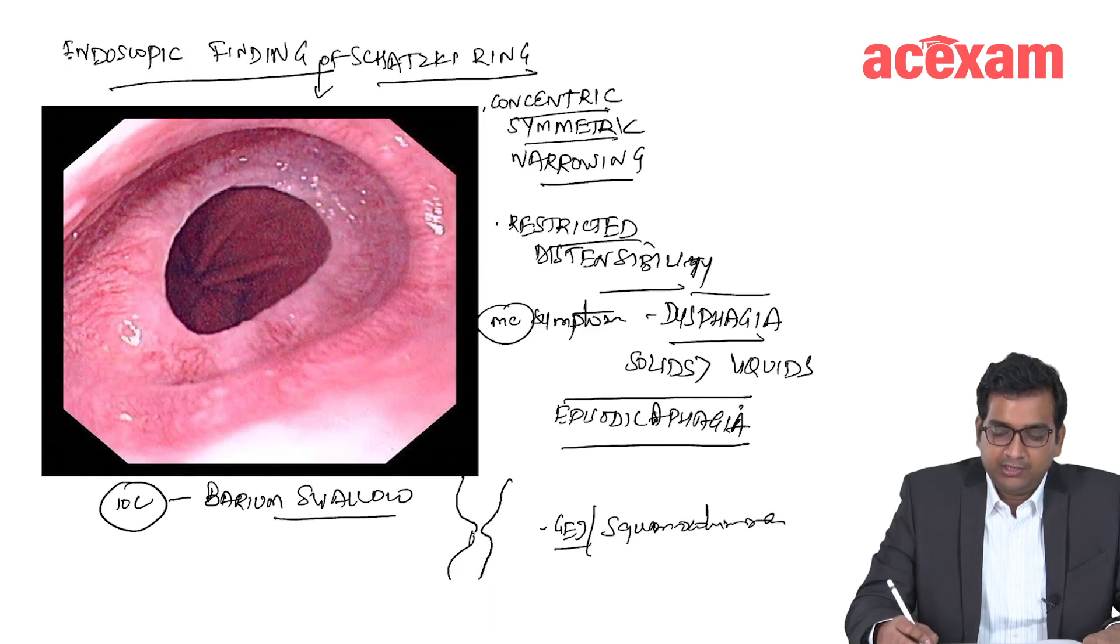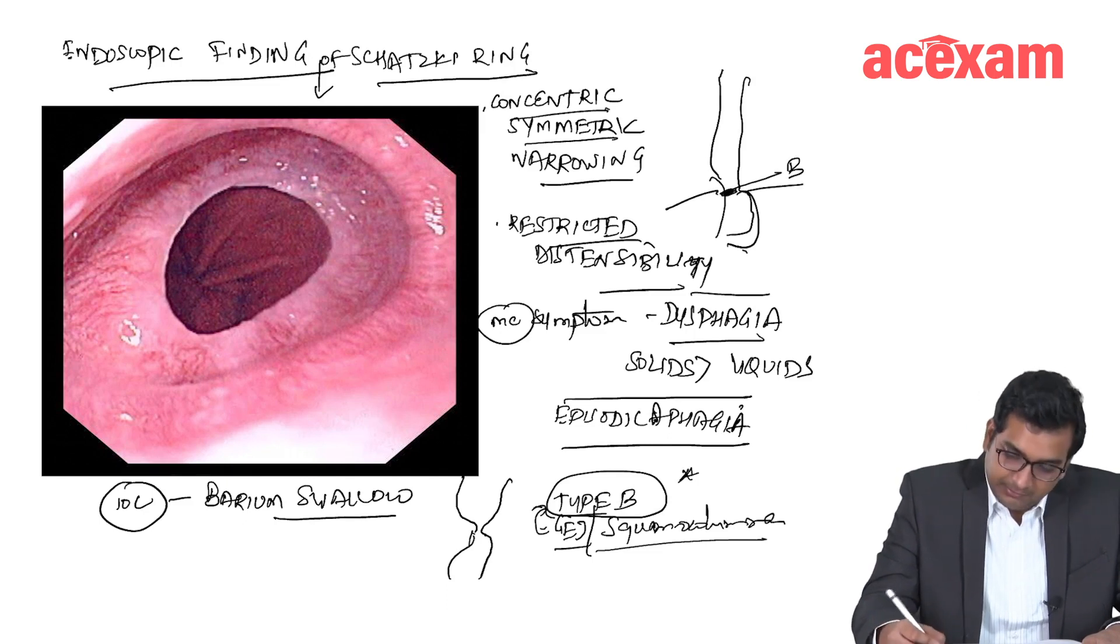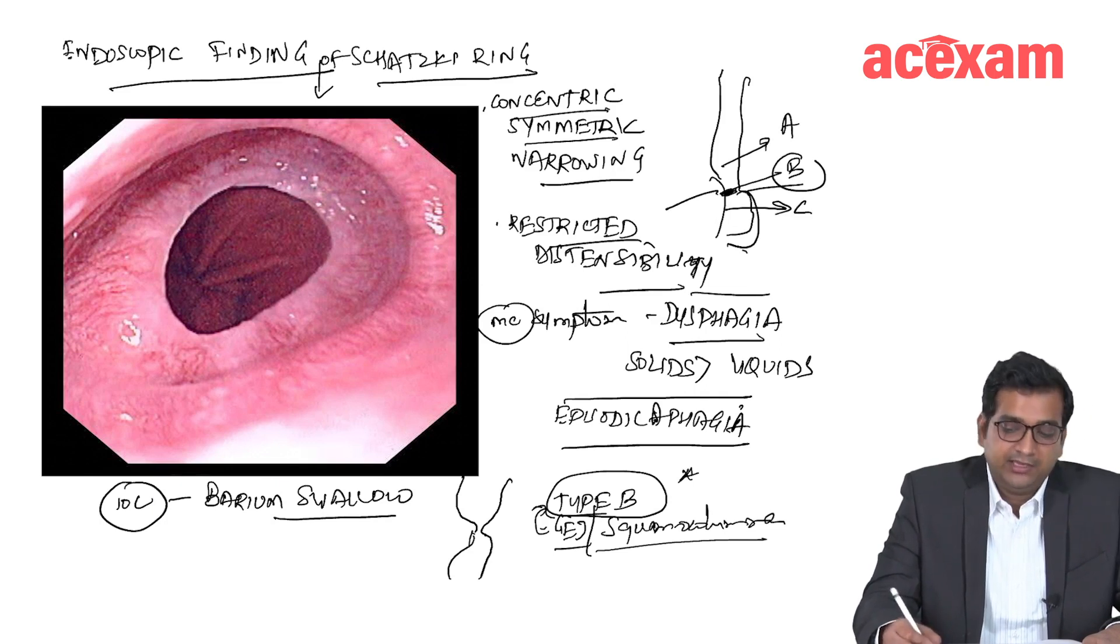This type of Schatzky ring is known as type B Schatzky ring. If the ring is present at the level of GE junction, it is type B. If it is present above GE junction, it is type A. If it is present below GE junction, it is type C.